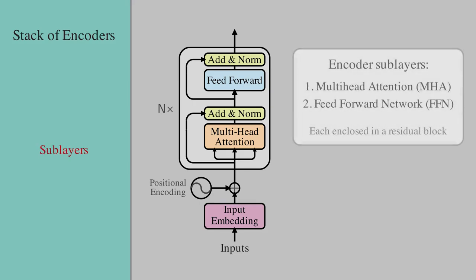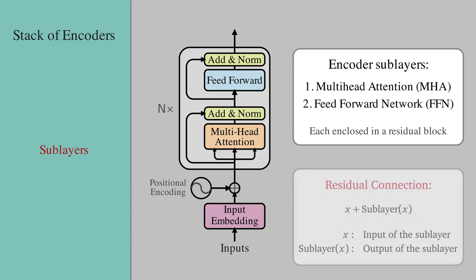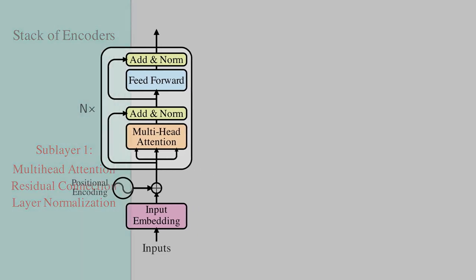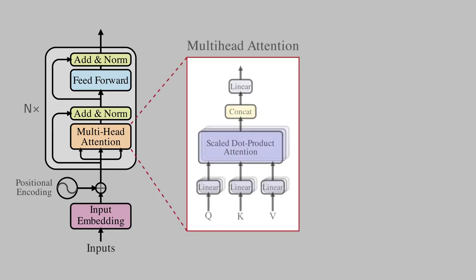Each encoder layer is composed of two main sublayers. A multi-head attention sublayer in the form of self-attention using the scale dot product attention, and a feed-forward network or FFN. Each of these sublayers are enclosed in a residual block which adds the input and output of the sublayer. So basically, X plus sublayer of X where X is the input and sublayer of X denotes the output. We have already described the multi-head attention and self-attention in details in the previous two videos.